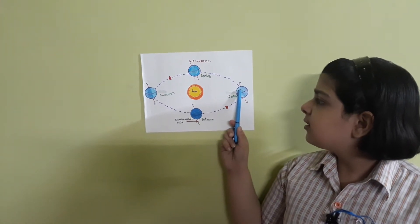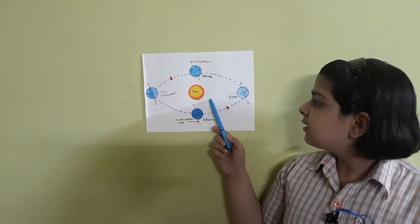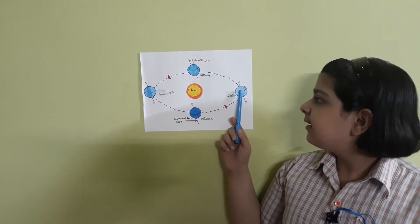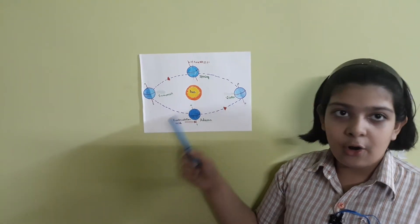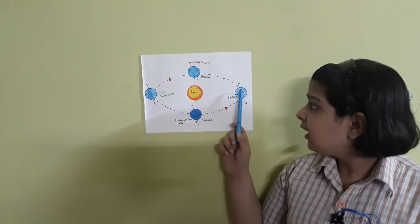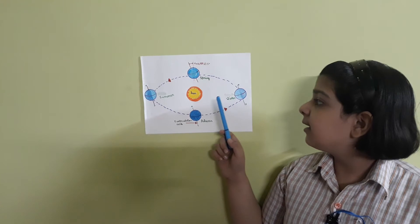When the northern hemisphere is tilted towards the sun, it receives direct sunlight and the days are hot and bright. Therefore, the northern hemisphere has summer.